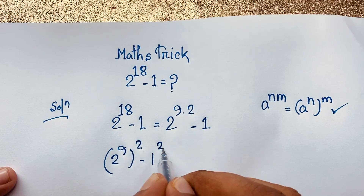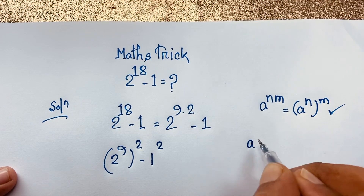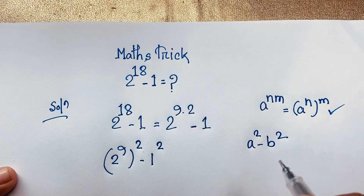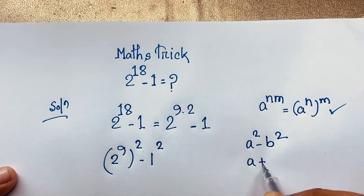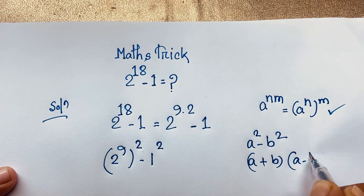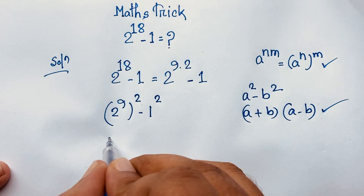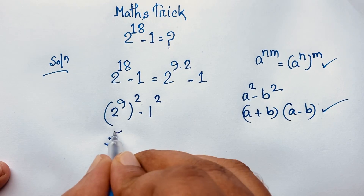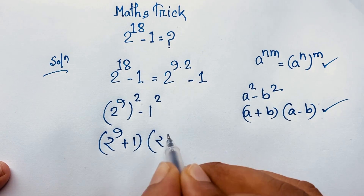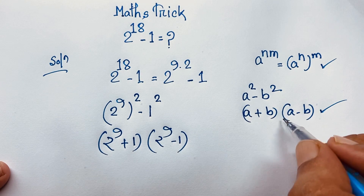I apply this math formula, and here is minus 1. Then I use the square here. So at this moment, I use this identity: a squared minus b squared. We know that this will be a plus b times a minus b. If I follow this math formula here, then you can see it will be 2 to the power 9 plus 1, times 2 to the power 9 minus 1.